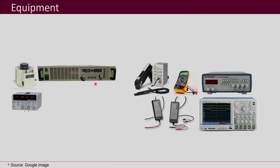Common equipment required includes an oscilloscope — which you may have already used in your lab — differential probes for voltage measurement, current probes for current measurement, multimeters, a function generator which is very helpful in testing, DC power supplies or large power supplies, and an autotransformer. These are some of the common equipment needed to test power electronic converters.